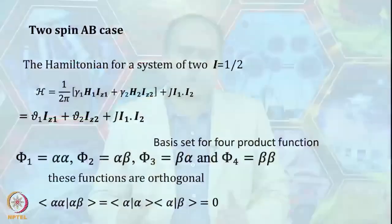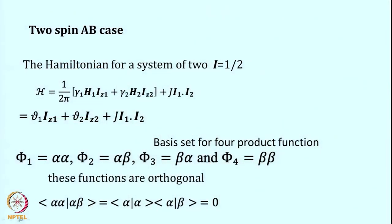We looked at various terms like what is the operator, what is eigenfunction, Hamiltonian and eigenvalues. We were at the stage where we wanted to discuss the two-spin system. Let us consider an AB system — two spins which have a close proximity of chemical shift, and that is what we define as an AB system. Both of these spins are half-spins, so I = 1/2 for both.